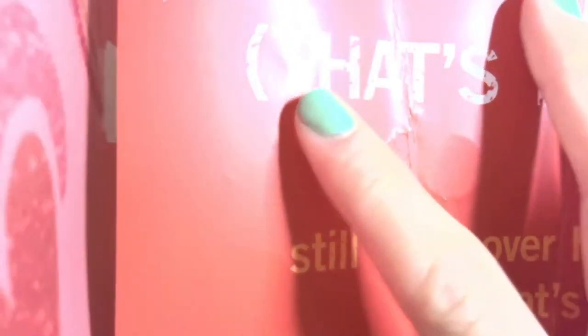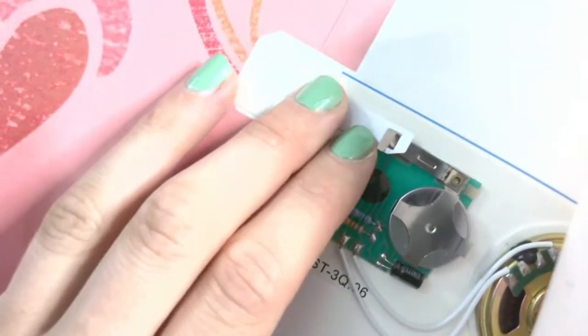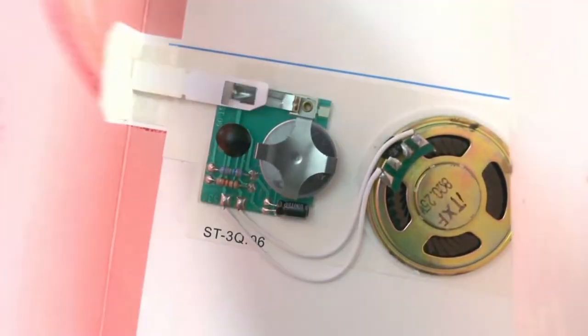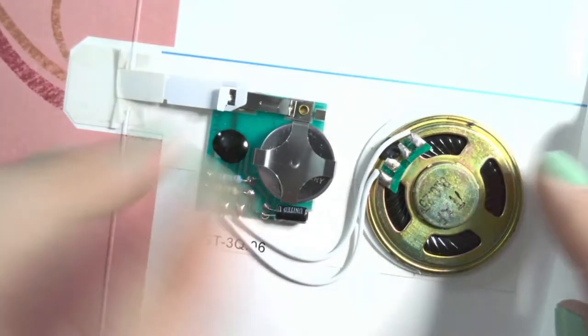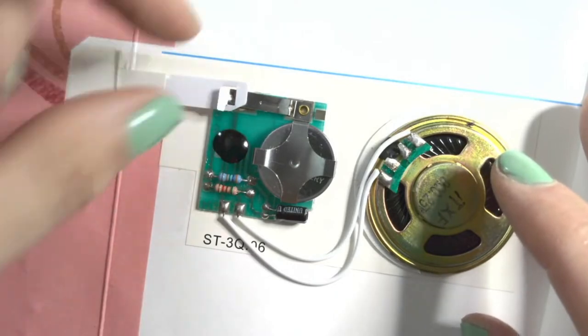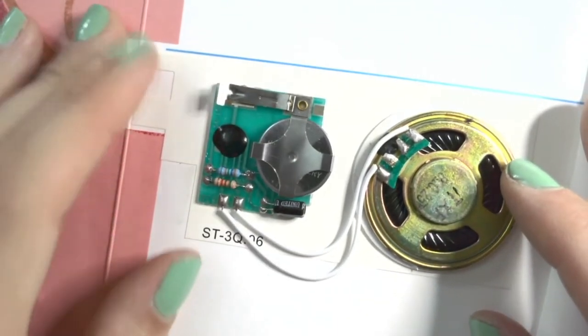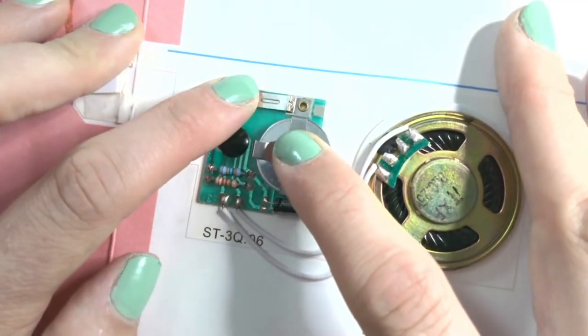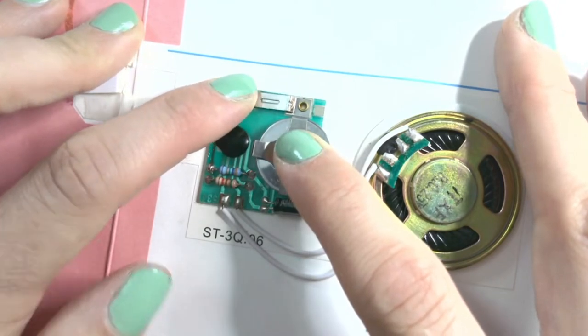So let's get started. Now I've played with this too many times so it's not actually working the way it should, but this little tab, if you have a card like this you can just remove that. And what I was doing is just pressing down here to turn it on. And there's Shania Twain.